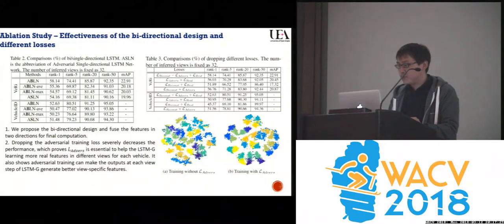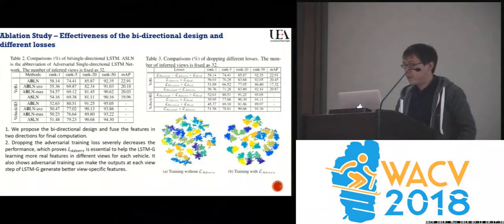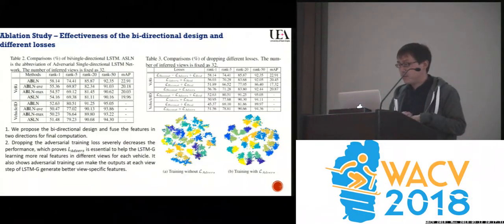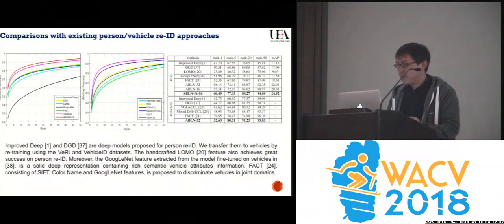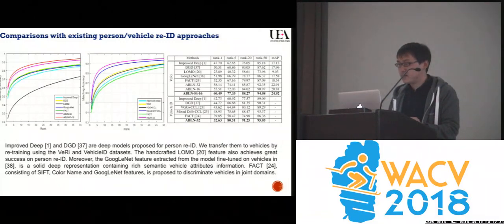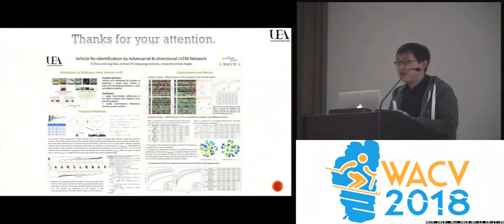It also shows adversarial training can improve the outputs at each view step. Finally, we compare our model with some state-of-the-art vehicle re-ID methods and achieved competitive results on both the VeRi and VehicleID datasets. Thanks for your attention.